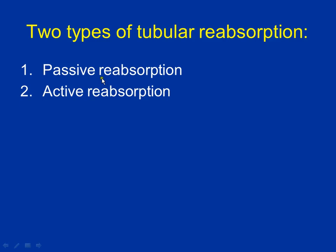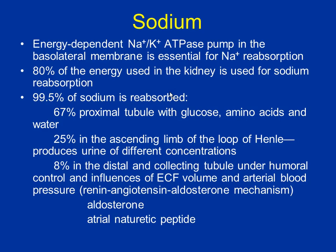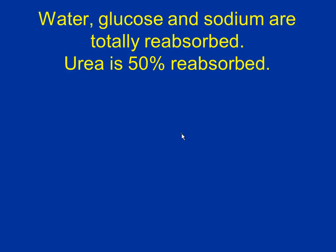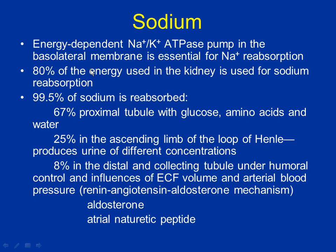Two types of tubular reabsorption: passive (diffusion, passive transport) and active (requires ATP). Almost everything from the GI tract regarding passive and active transport applies exactly the same here. Sodium is transported exactly like in the GI tract — moved by sodium-potassium ATPase, which is an enzyme, making it active transport. That pump operates on the basolateral membrane. About 80% of all the energy the kidney uses is focused on reabsorbing sodium, because sodium helps maintain blood pressure and the electrical properties needed for neurons to depolarize.